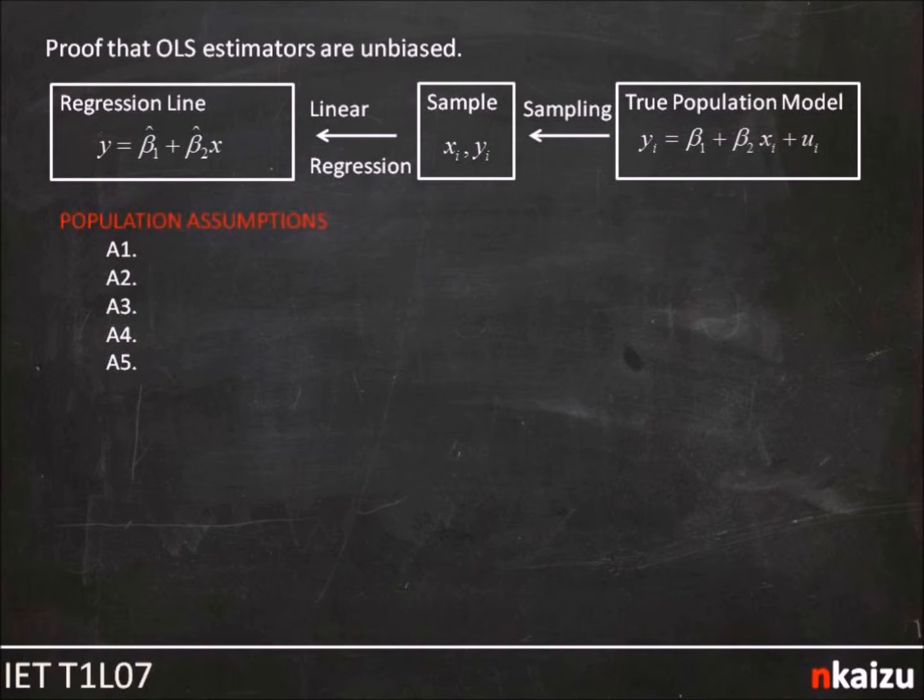The answer to why OLS is usually our favorite method of linear regression is a two-part answer. The first bit is that OLS is unbiased, and the second is that OLS has the lowest variance of all unbiased estimators. In this video, we are focused on the first bit of that answer, proving that OLS estimators are unbiased.